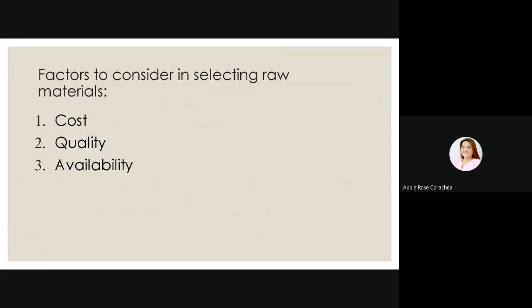Number three, availability — available ba siya within your community, or within the town, within the province, and within the nation or country? So, dapat alam din natin yan. Number four, supplier credibility — ito yung mahirap kumanap, yung supplier na hindi nananagaan ng presyo, at supplier na honest, at magbibili talaga ng quality products.